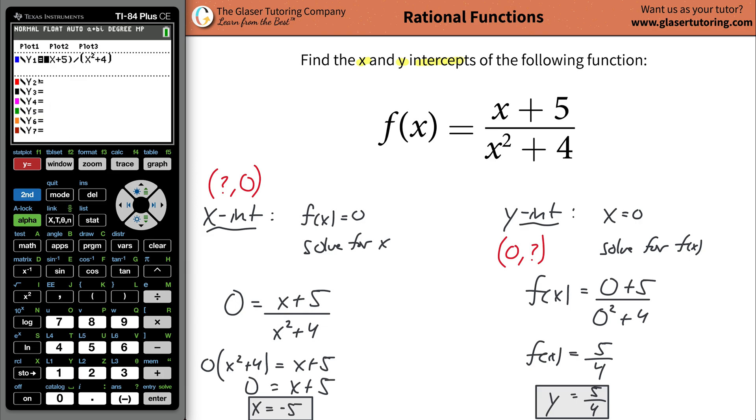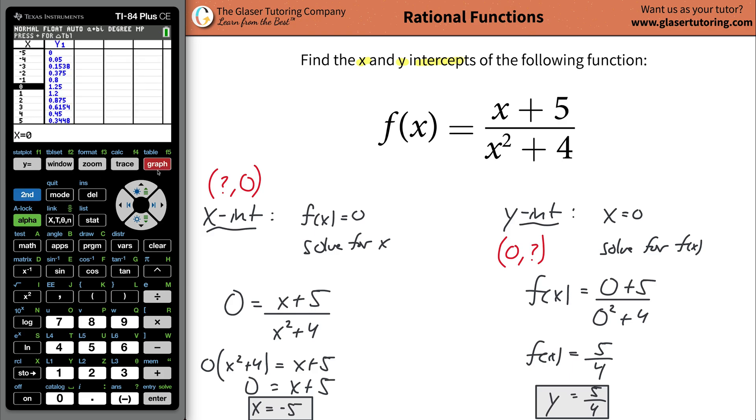Now, graph this thing. I already have it in there. And what we'll see is let's take a look at the table. So hit second table. All right. And now let's take a look at these values. When y is 0, let's go up to here. Look, when y is 0, x is negative 5. That's the x intercept, when y is 0.